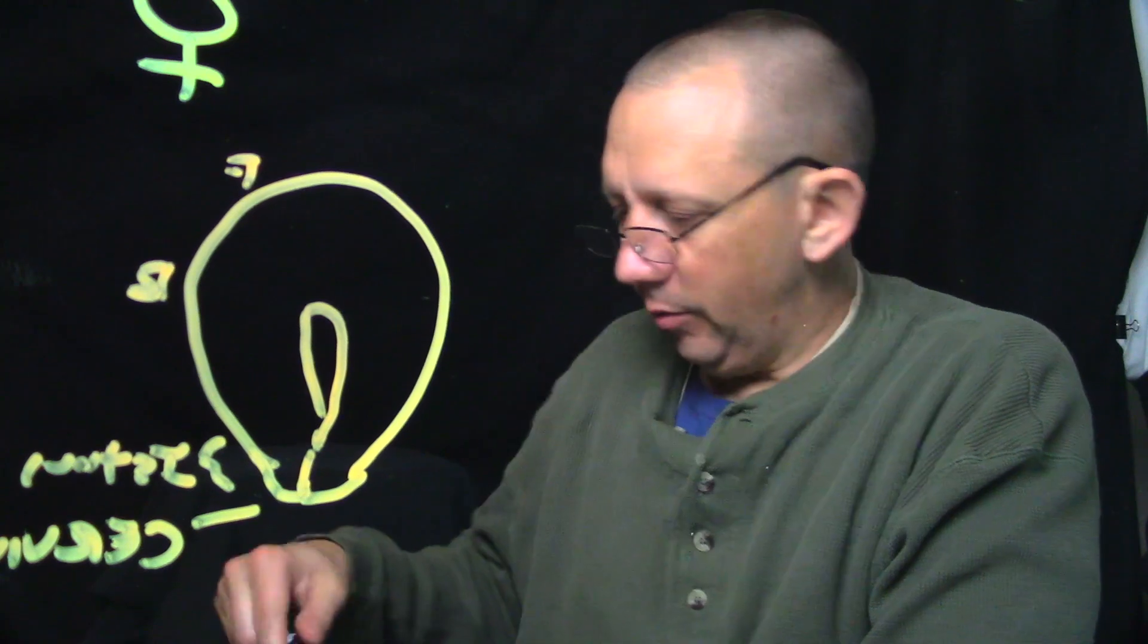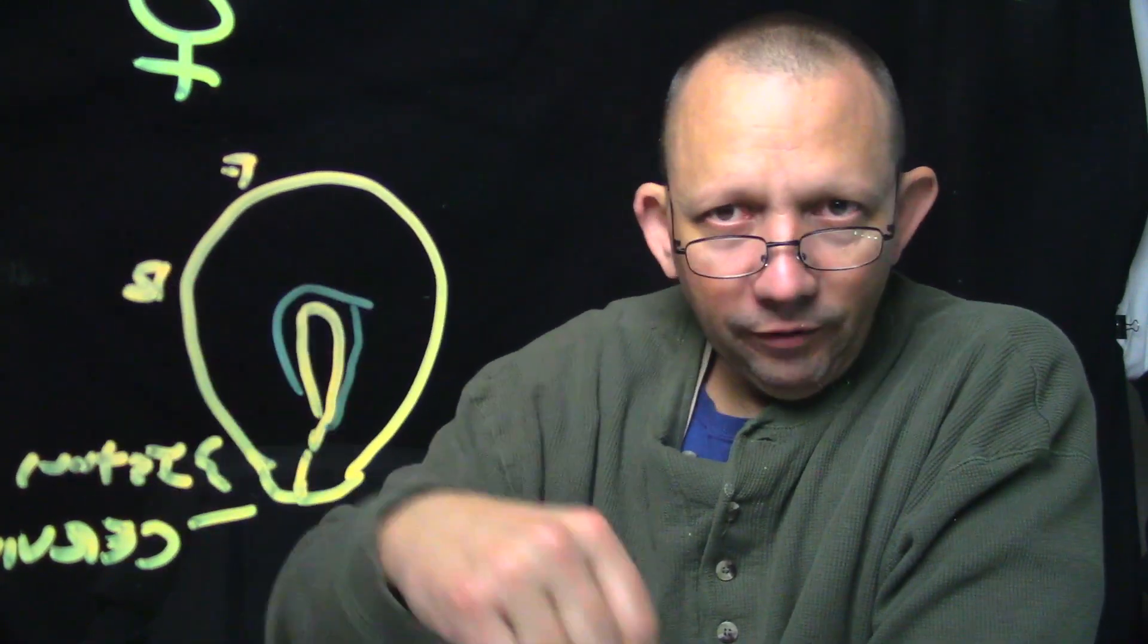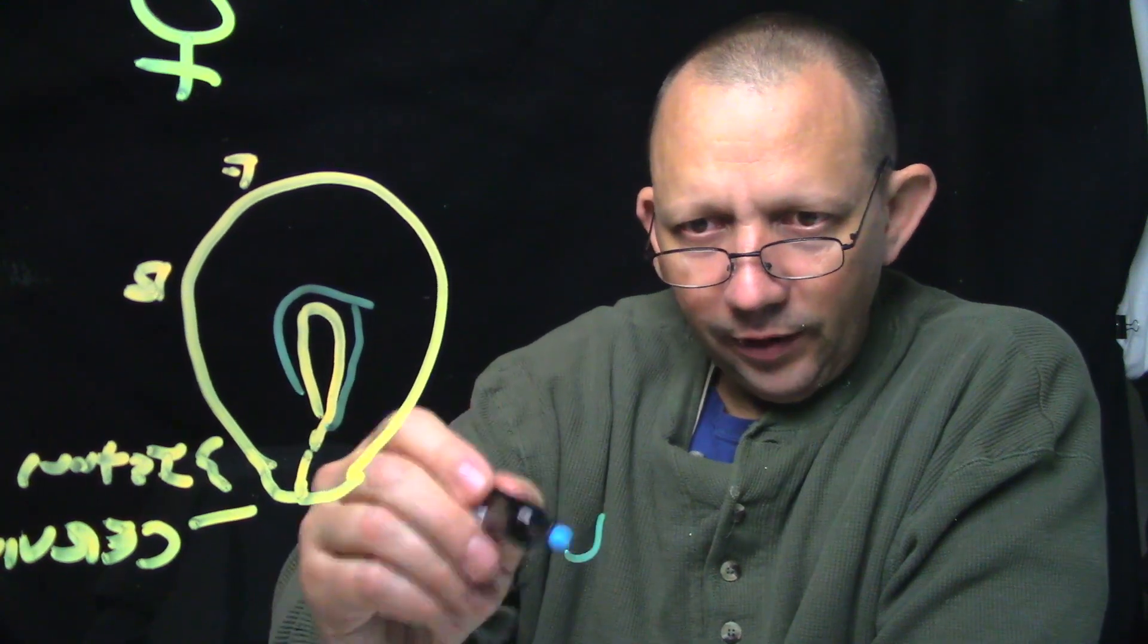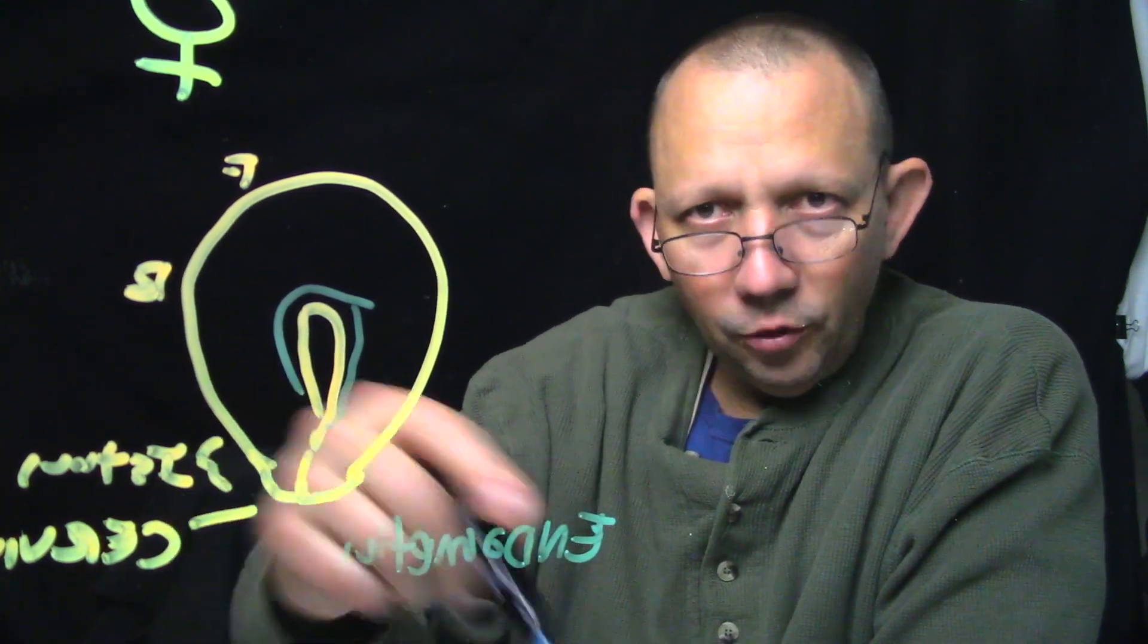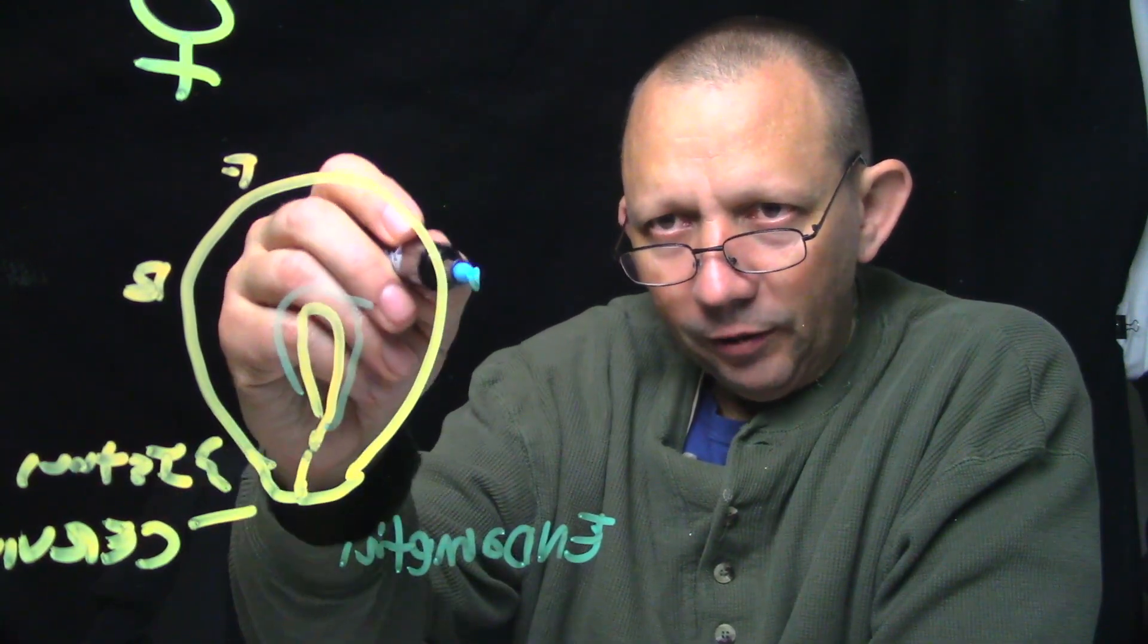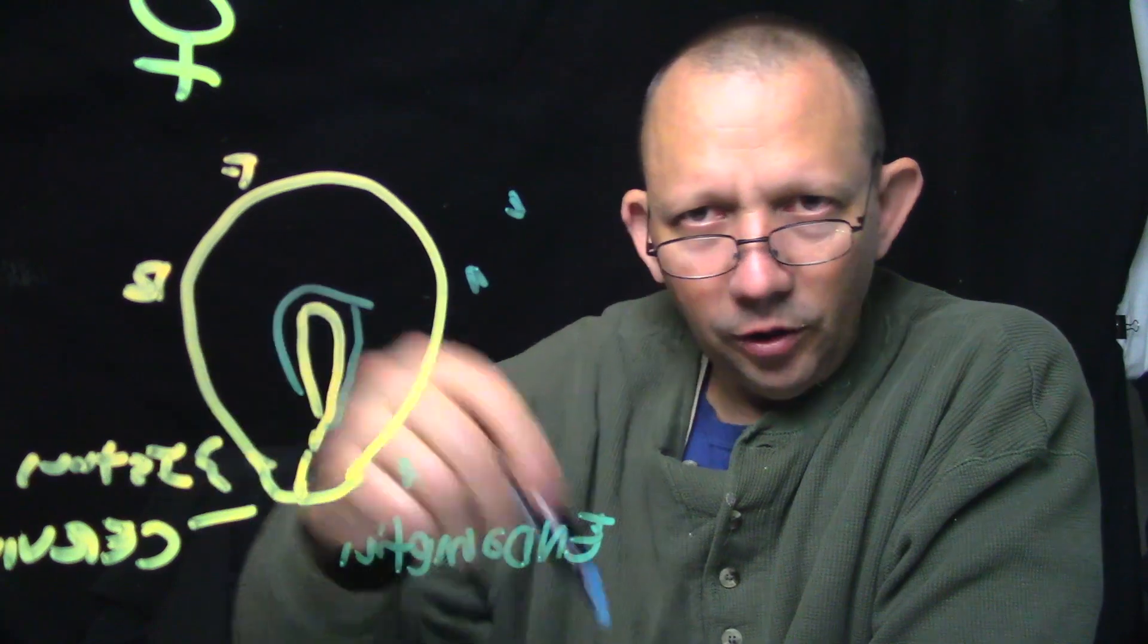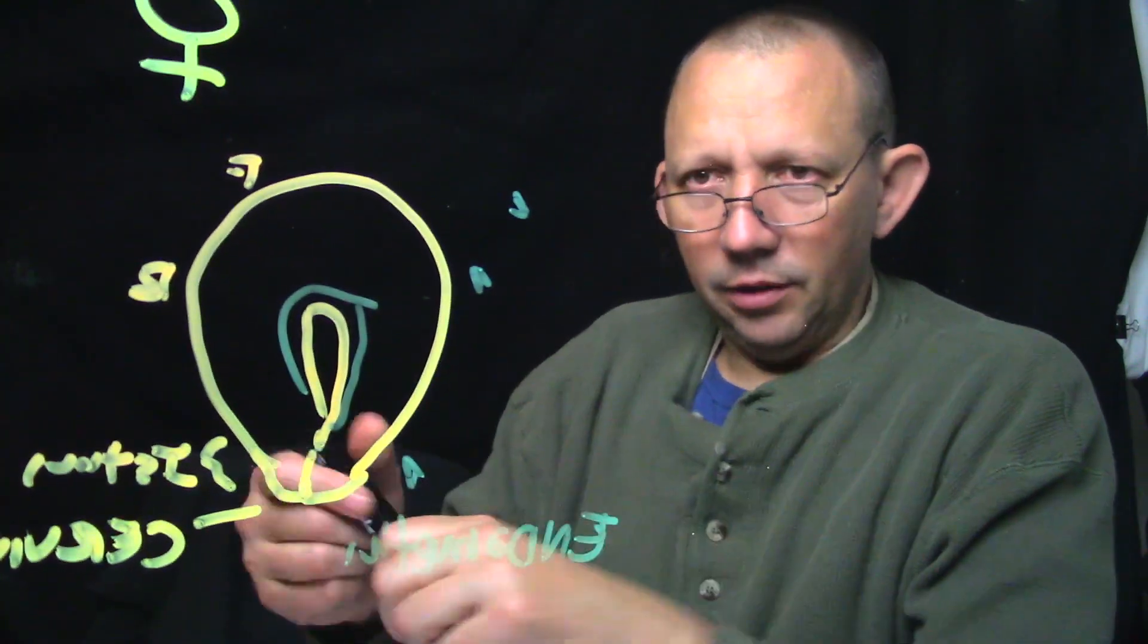Inside here we have the inner layer, which is the endometrium. Remember endo everything—endometrium. The endometrium can end up breaking off and end up out here, and we have what's called endometriosis, a condition of the endometrial tissue being outside of the uterus, which isn't very good.